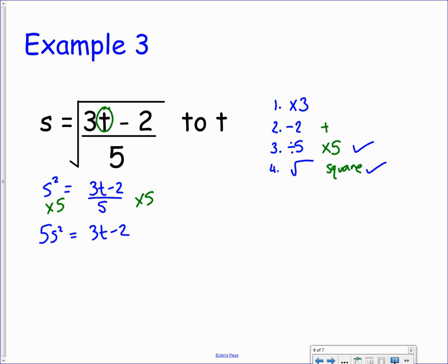Now for the takeaway 2, we need to add 2. That will give us the expression 5s squared plus 2 on the left-hand side and 3t on its own on the right.